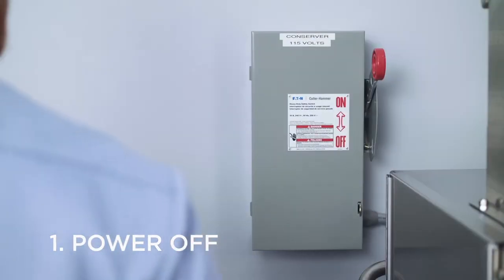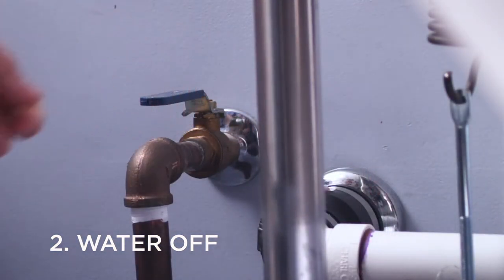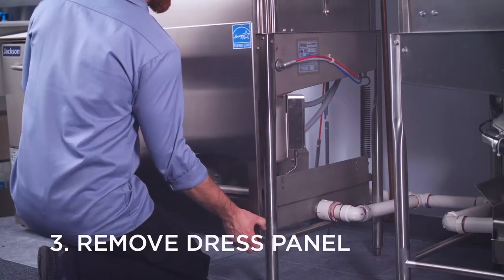First, you'll need to power down the unit by switching off the circuit breaker. Then, close the valve to the water supply line.